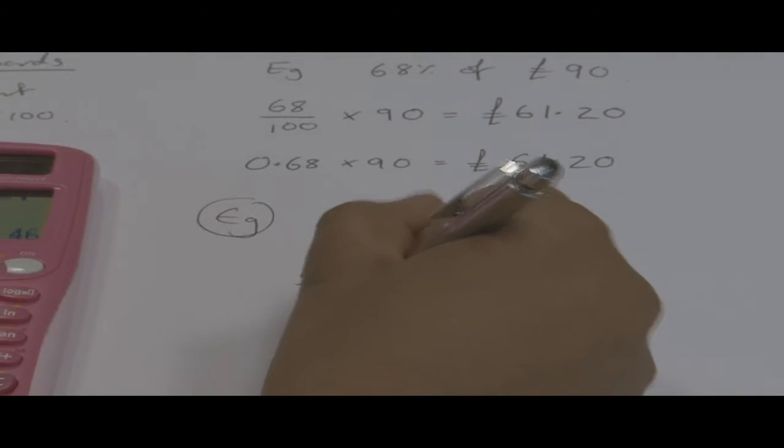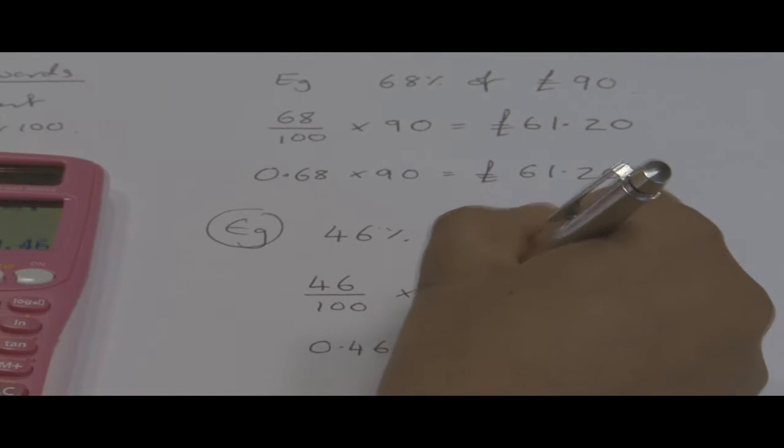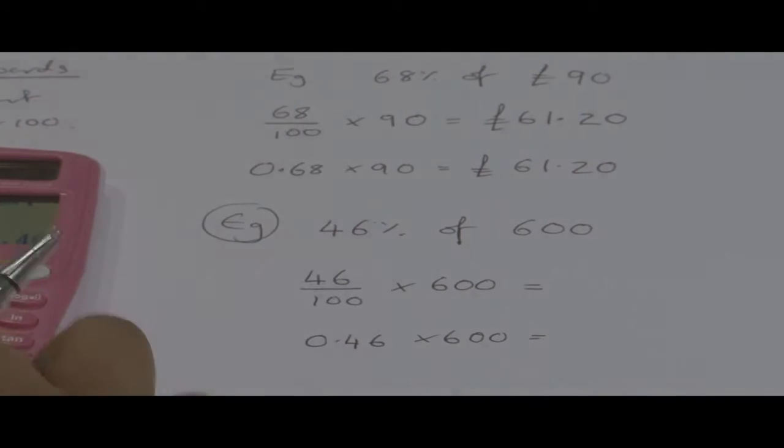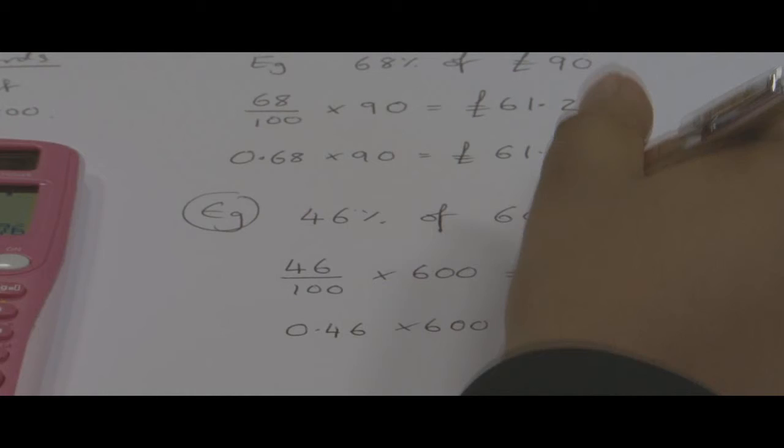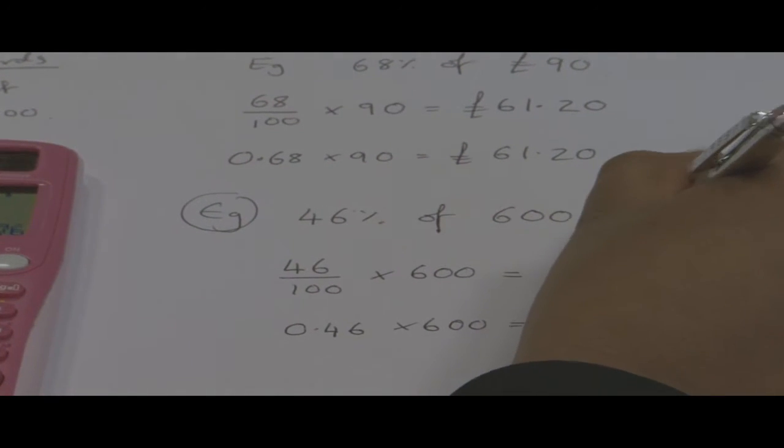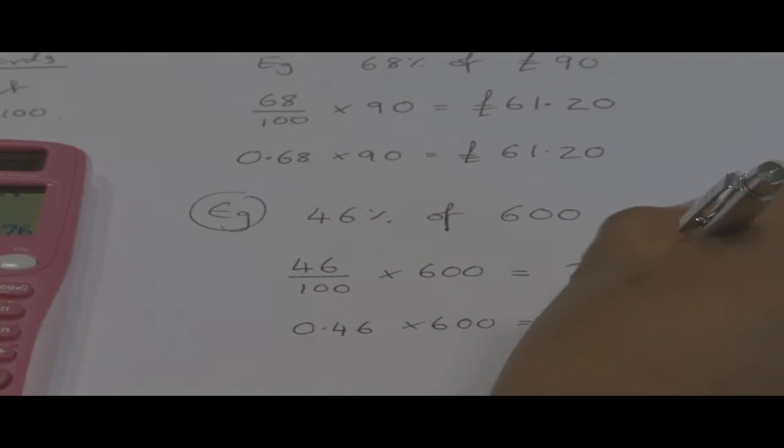That is the decimals 0.46, and times that by the amount, which gives us 276.